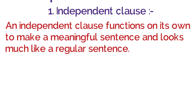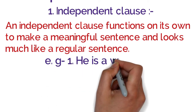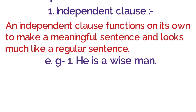An independent clause looks much like a regular sentence and makes a meaningful sentence on its own. For example: 'He is a wise man' — he is a buddhiman vyakti. This sentence has a complete meaning and function and does not depend on any other sentence. Another example: 'I like him' — this is also a complete meaningful sentence.